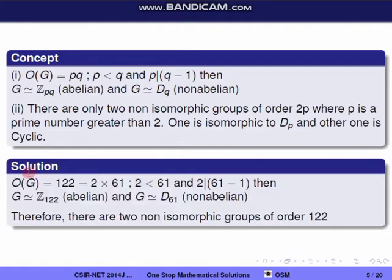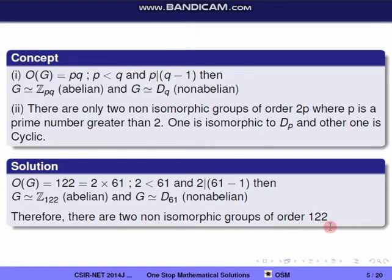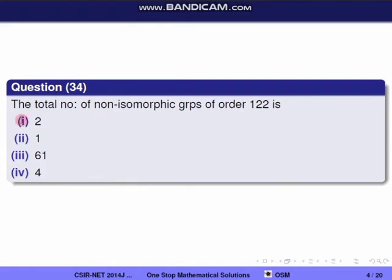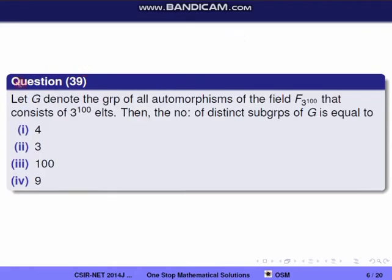For order 122 = 2 × 61, since 2 < 61 and 2 divides 60, G is isomorphic to Z_{122} (abelian and cyclic) and G is isomorphic to D_{61} (non-abelian and non-cyclic). Therefore there are two non-isomorphic groups of order 122. The correct option is 1.